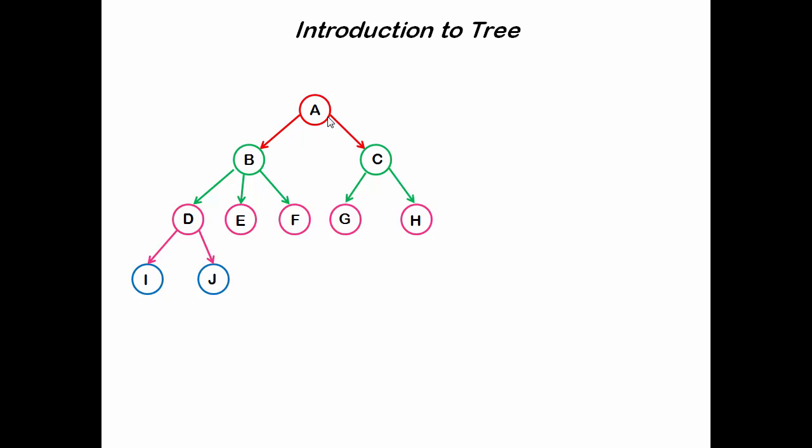Now I am going to define some terms that are frequently used with tree data structure. First one is root. The topmost node of the tree is called root. For this example, A is called root node.